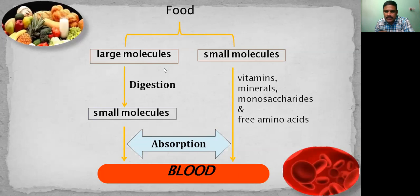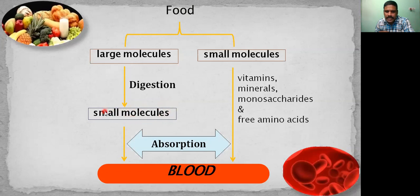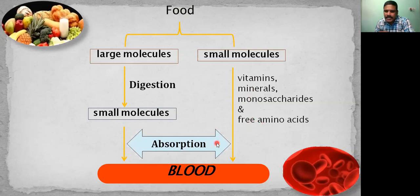In this slide, we can see what happens in this process of digestion. Large molecules, by the process of digestion, are being converted into smaller molecules. There will be different types of smaller molecules like vitamins, minerals, monosaccharides, free amino acids, and fatty acids — all formed as a result of digestion. Finally, after digestion is completed, these smaller molecules will be absorbed into the blood, and blood supplies all these digested smaller molecules to all body parts.